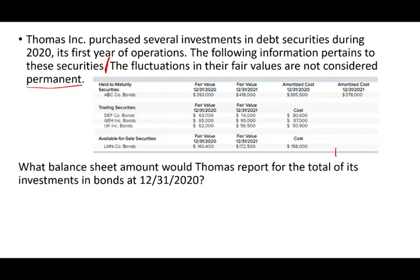We have to be very careful because I could ask 15 different questions about this exhibit. The question is: what is the total of the investment in bonds? You have held-to-maturity, trading bonds, and available for sale. What is the total? What you need to know is how bonds are reported on the balance sheet. Available for sale and trading securities are reported at fair value, while held-to-maturities are reported at amortized cost. And we have to be very careful — we are dealing with year 2020.